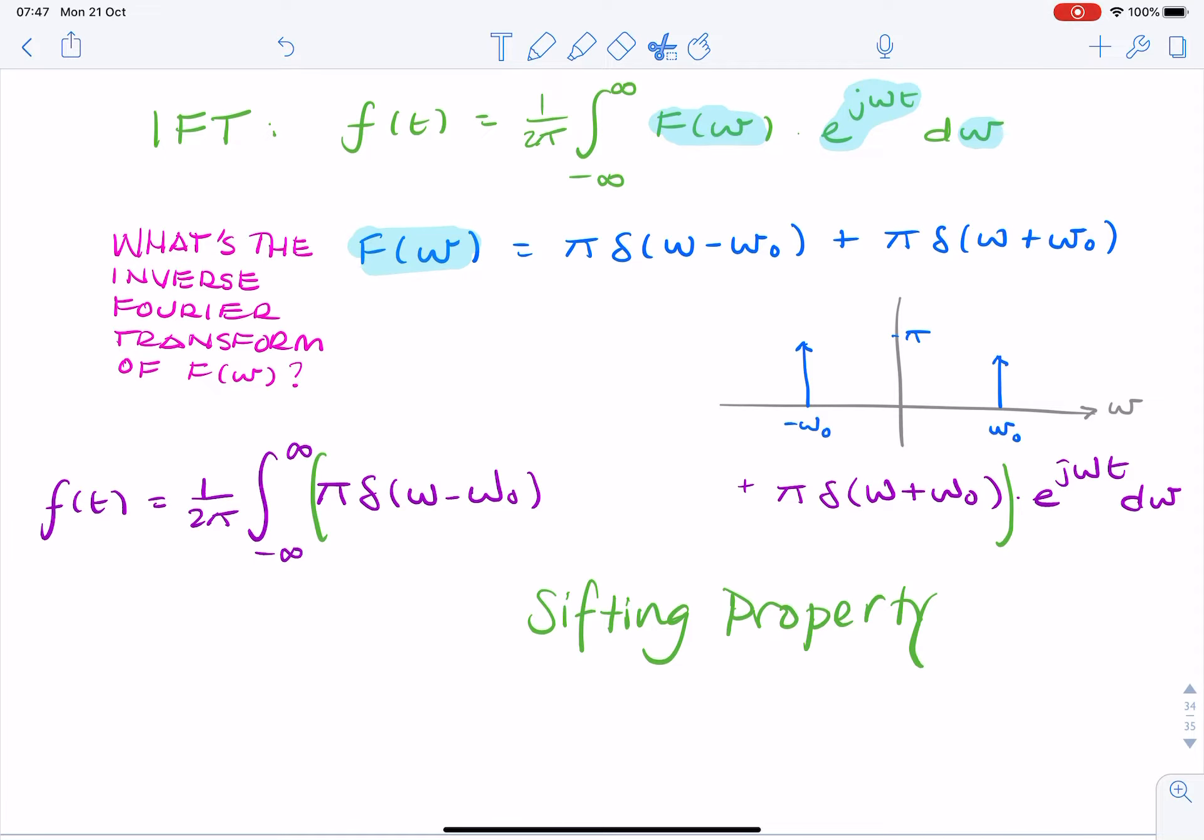I can put my complex exponential here, j omega t d omega. And I can add an additional integral, 1 over 2 pi, minus infinity to infinity. And now, using the sifting property, I can replace the value of omega there with minus omega nought and omega nought.